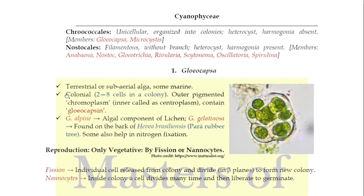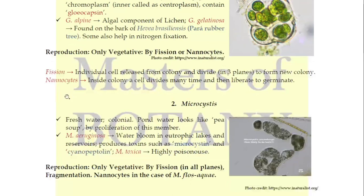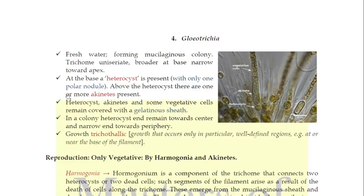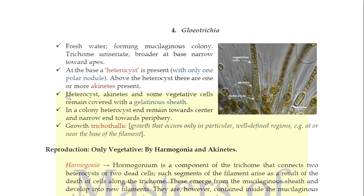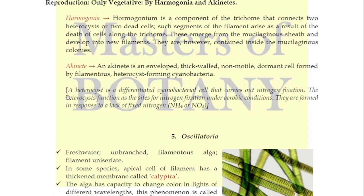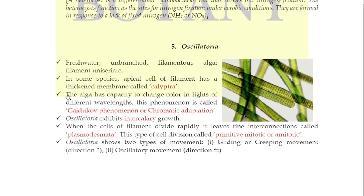Hello friends, welcome to the channel. My name is Vinakumar Singh. We started from the last video where we saw Gliocapsa, talked about its life cycle, Spirulina, and Gliotrichia. In this video we will talk about the next 4 members: Oscillatoria, Anabaena, Nostoc, and Rivularia.